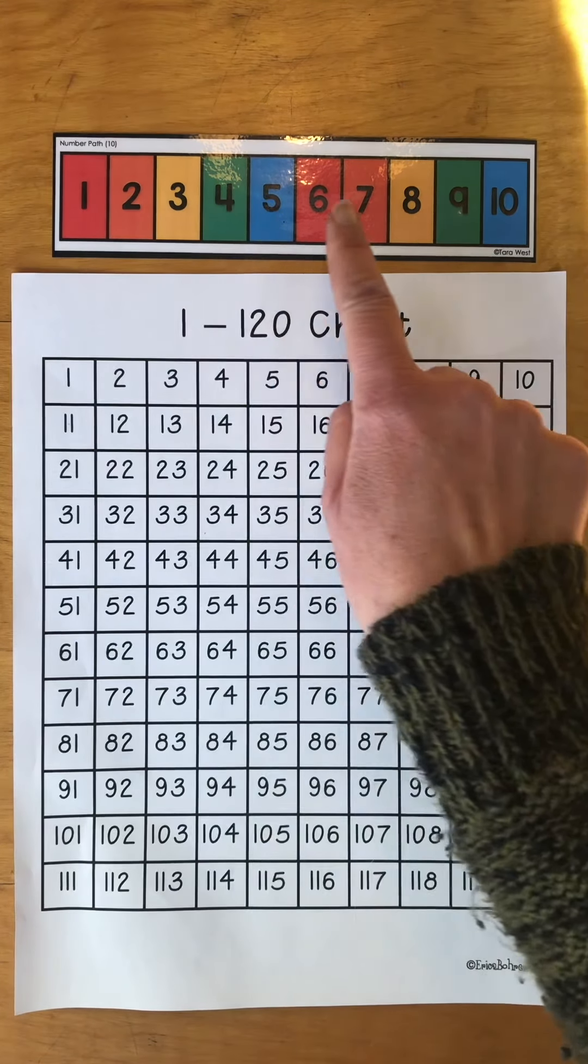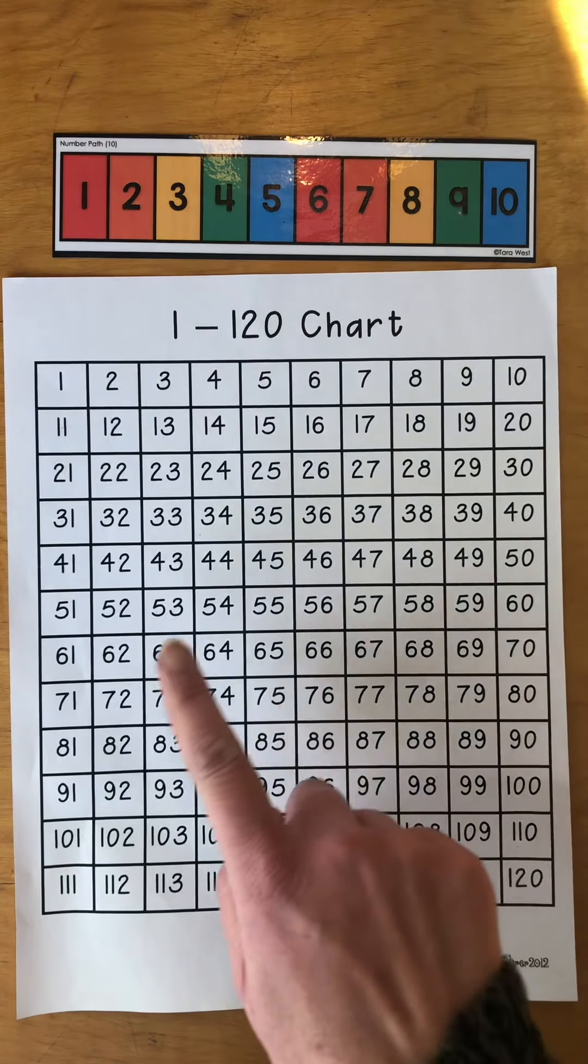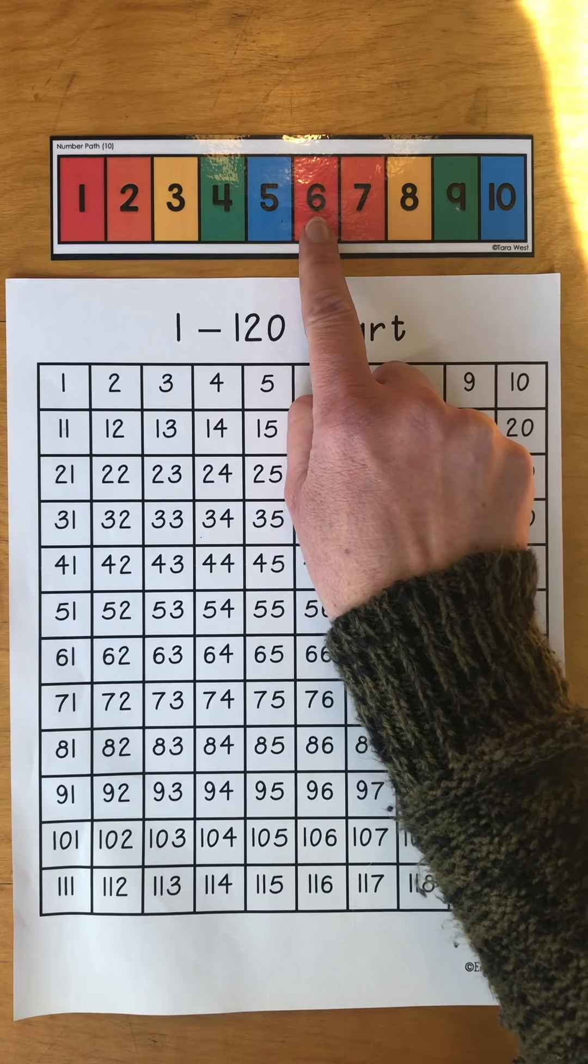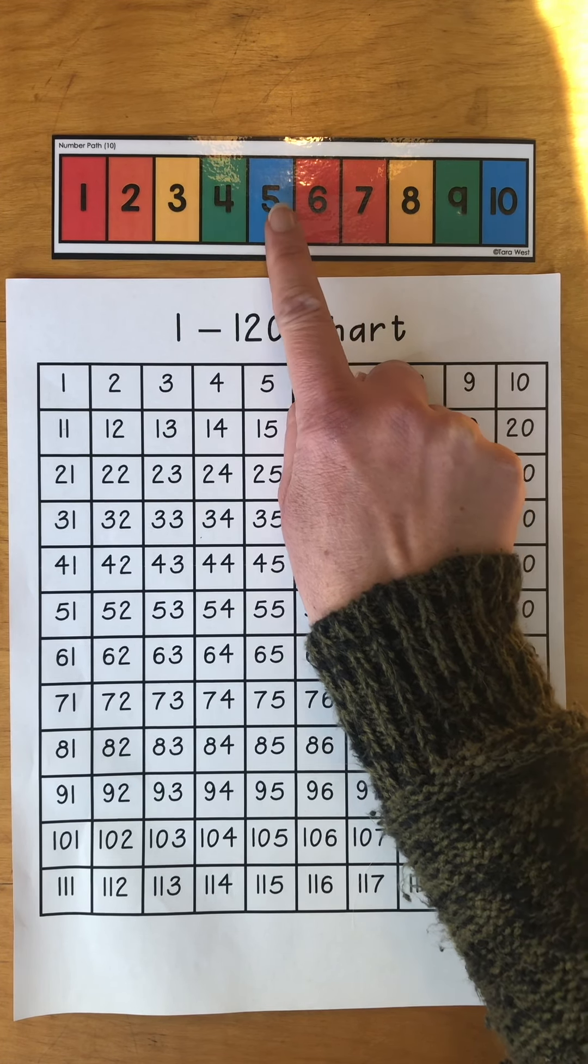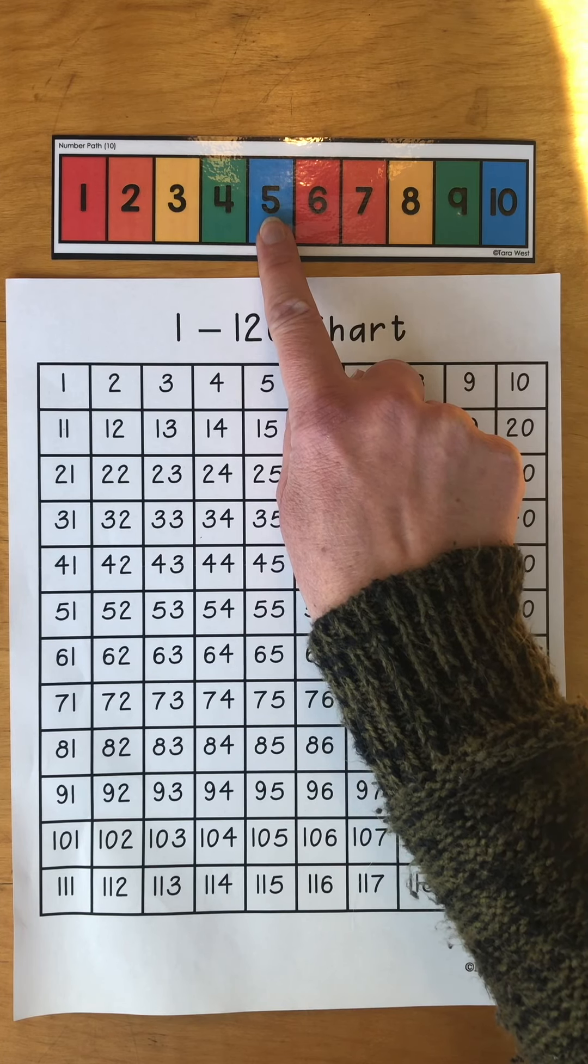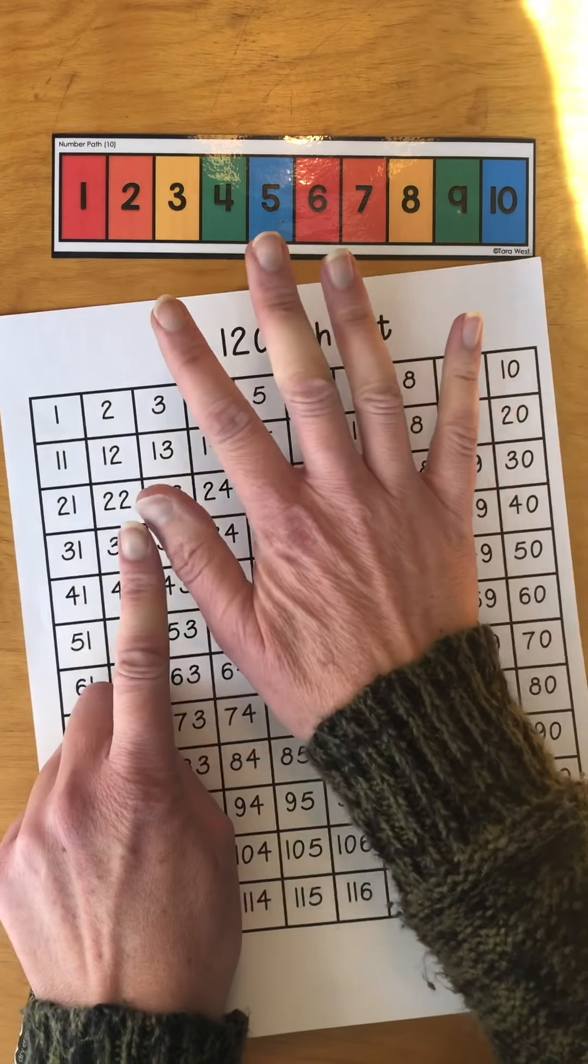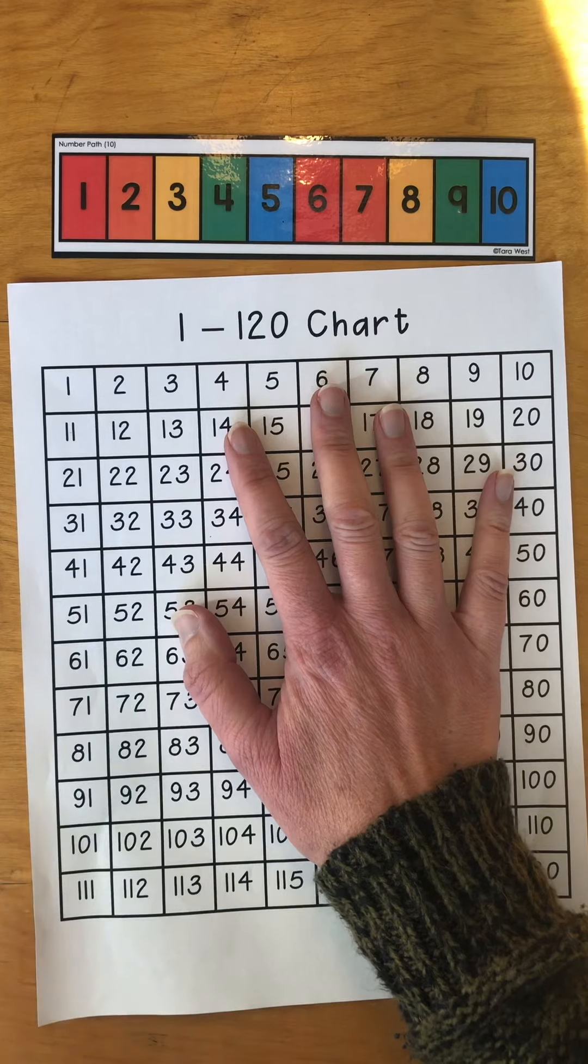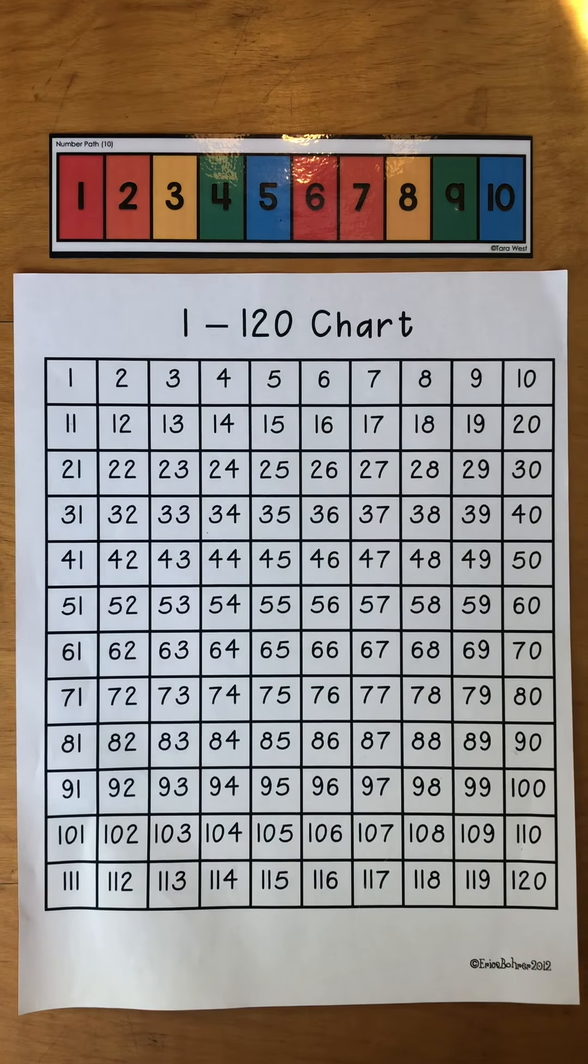So we can use what we know about one through ten to help us when we're getting into some of those bigger numbers down here. If I was to say what's one less than six, you would know that you need to say five. It's the number right before six. If I had six and I want to find one less, I'm going to take one away and we get five. So we're taking one away, but we're saying the number that comes before it.